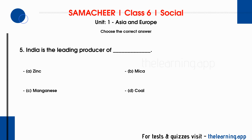Question 5: India is the leading producer of dash. Options are: A. Zinc, B. Mica, C. Manganese, D. Coal. Correct answer is B, Mica.